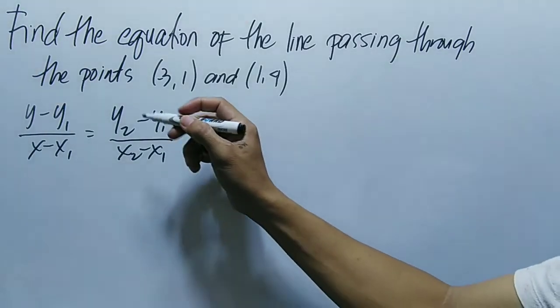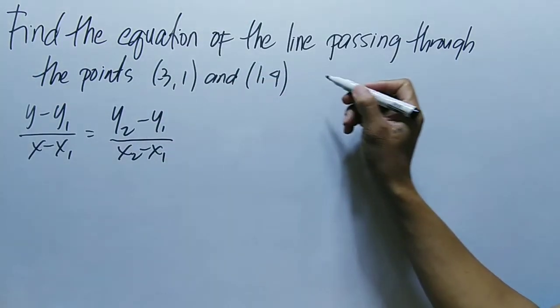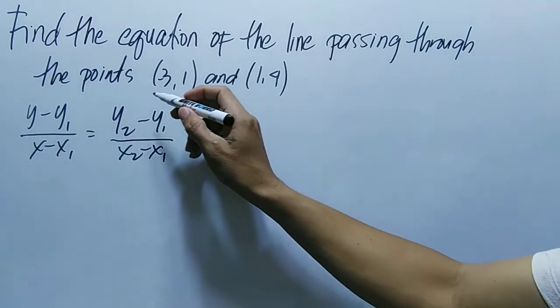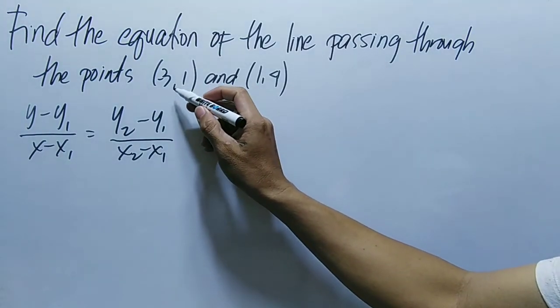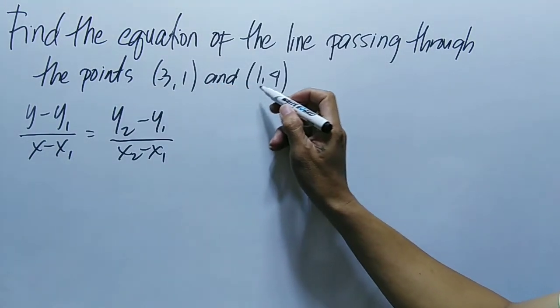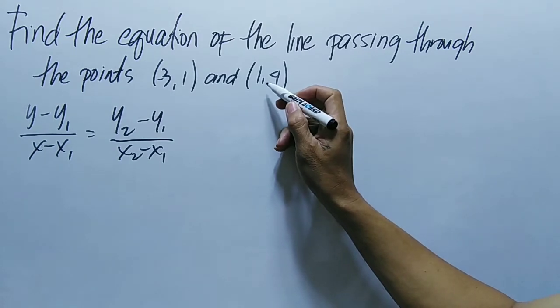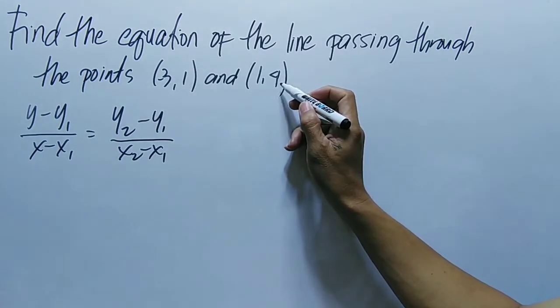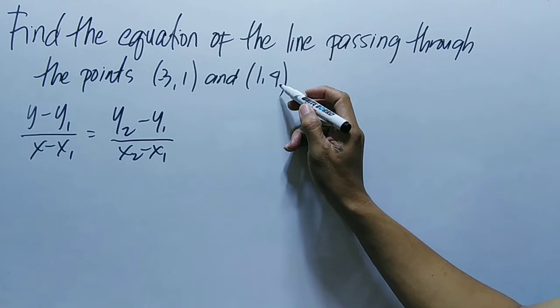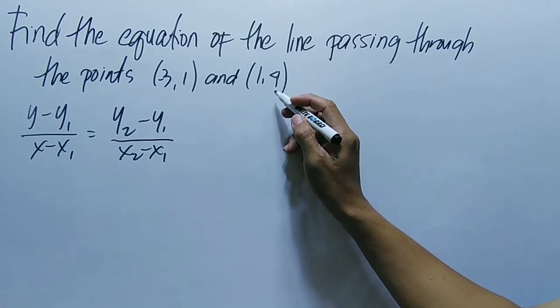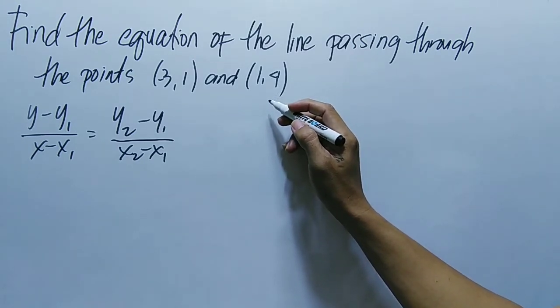Okay, so we have to find the equation of the line passing through the points (-3, 1) and another point is (1, 4). To find the equation of the line given two points, we have to use this formula: